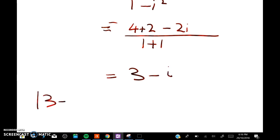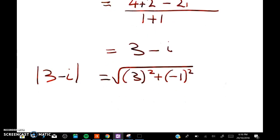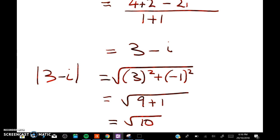So now we want to find the magnitude of 3 minus i, and that's equal to the square root of 3 squared plus negative 1 squared, which is equal to the square root of 9 plus 1, which is equal to root 10 as required. Okay, so that's your merit question.